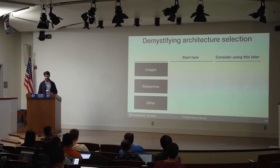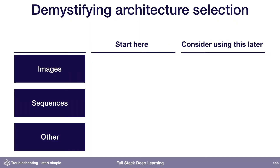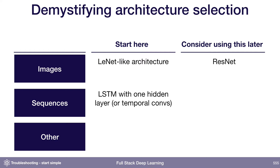If your data looks like images, start with a LeNet-like architecture. As your code base gets more mature and you're confident you don't have bugs in your data pipeline, consider moving to something like a ResNet. If your data looks like sequences, the classical recommendation is to use an LSTM, though these days doing something like temporal convolutions or causal convolutions is maybe even a more sensible choice to start. When your problem gets more mature, you can move to an attention model or a WaveNet-like model.